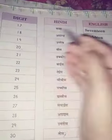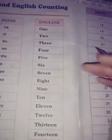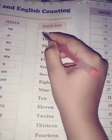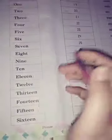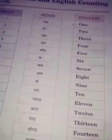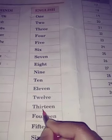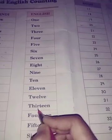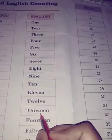बस इतना ही आज के लिए। देखिए, आपको याद करना है 1 से लेकरके 20 तक, ठीक है? यहाँ से देखिए, 12 तक याद करने के बाद आप 13 का याद करेंगे, तो T-H-I-R-T, ठीक है? T-H-I-R, उसके बाद में क्या लगाएंगे? T-W-E-N।